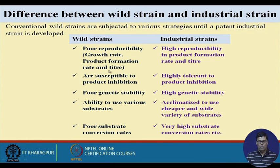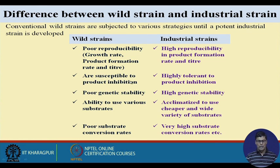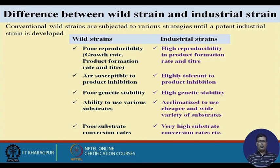Compared to wild strains, industrial strains have high productivity, high product formation rate, and high titer. The concentration of product has great influence on the cost of production, as recovery cost is reduced when product concentration is very high. Wild strains are susceptible to product inhibition — as product concentration increases, it inhibits organism growth.